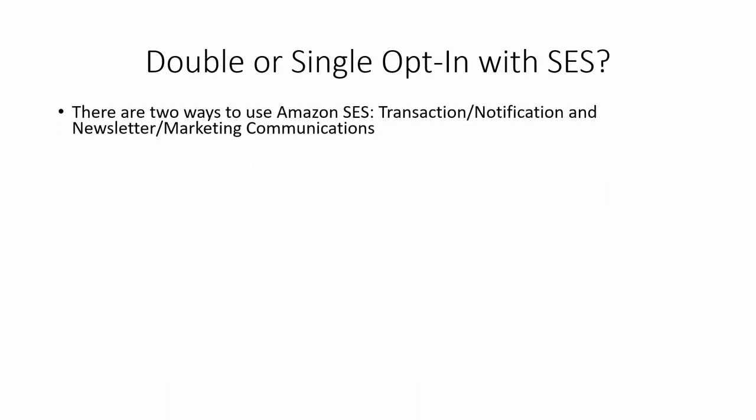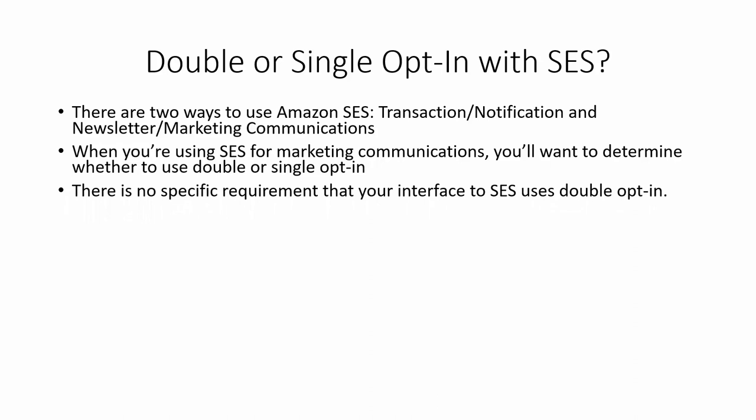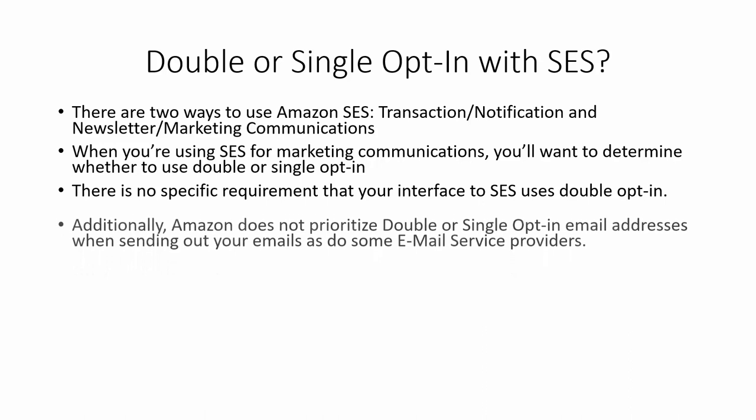You will be faced with the question of whether or not you should or must use double or single opt-in when it comes to Amazon SES. There are two ways to use Amazon SES — transactional or notification emails, or marketing communications. When using SES for marketing communications, you'll want to determine whether to use double or single opt-in. There is no specific requirement that the interface you're using with Amazon SES use double opt-in, so you can do single opt-in.